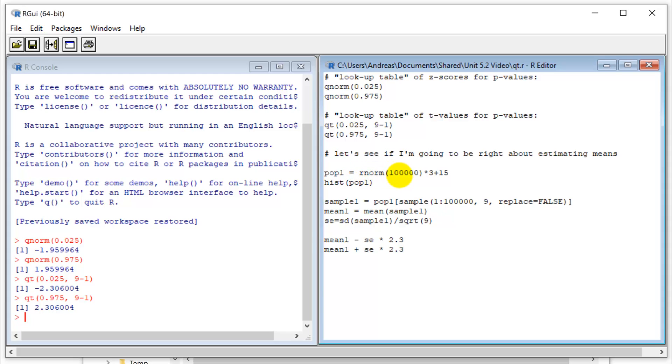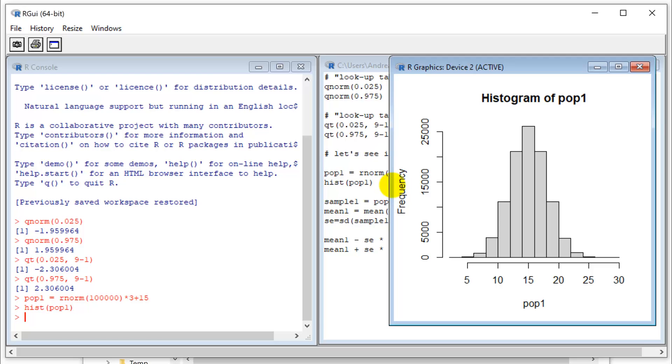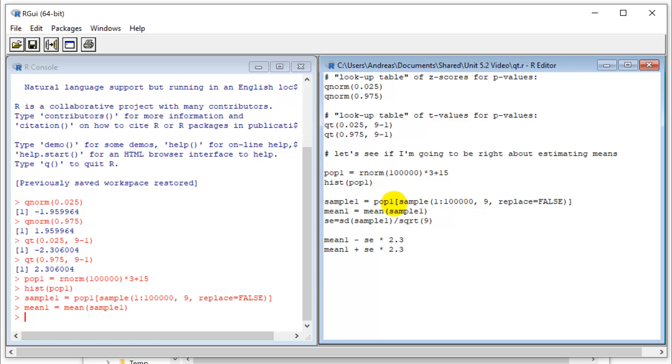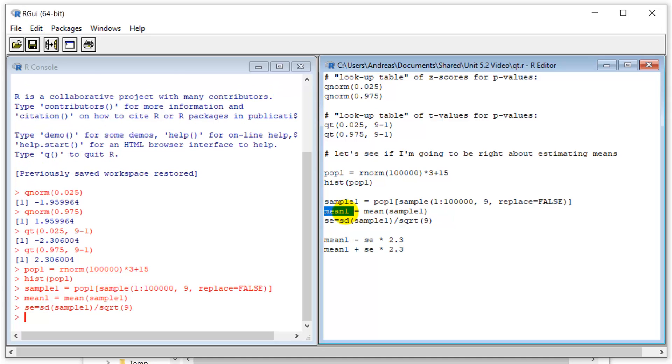So let's see if this actually works. We can generate our standard population of 10,000 trees with a mean of 15 and a standard deviation of 3. And I'm going to sample this. Nine samples, just as we've done this before. Calculate the mean. Now this time we calculate the standard error based on the sample.